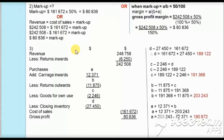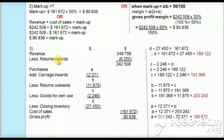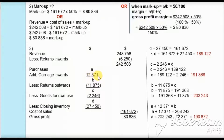Now we will draw a rough draft of the trading section of the income statement to identify missing figures. Start with revenue of $248,758, subtract return inwards of $6,250 to get actual revenue of $242,508. Then we subtract cost of sales, which consists of purchases — the figure is unknown so I label it A. To purchases we add carriage inwards of $12,371, which is the transportation cost of purchases, giving us B: A plus $12,371.